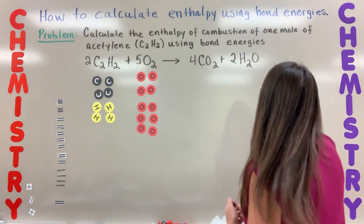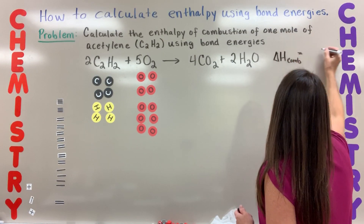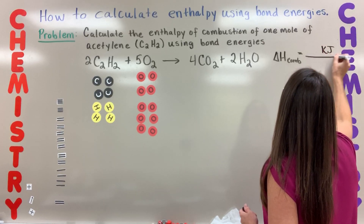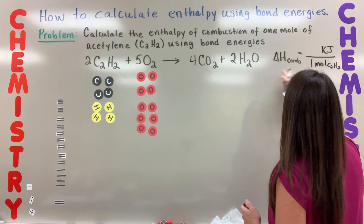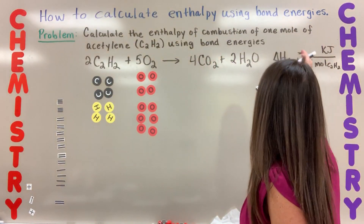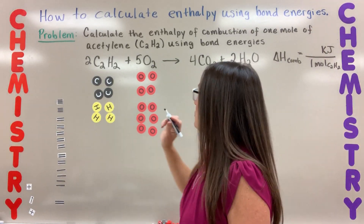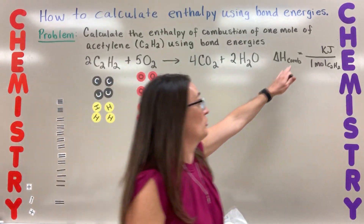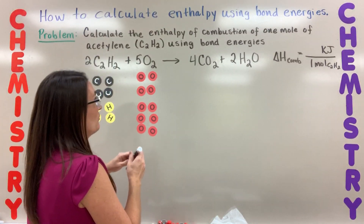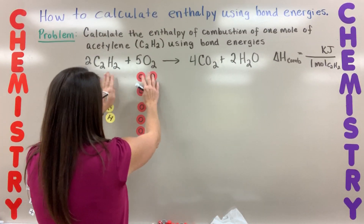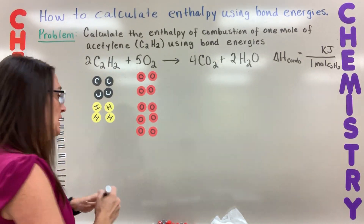The next step is figuring out the heat or enthalpy of combustion in kilojoules per one mole of acetylene — that's our final goal. Hopefully you can make a prediction about the sign: because it's a combustion reaction, typical combustions are exothermic, so you'd predict the sign would be negative. But we'll prove it. Next we have to figure out how these molecules are bonded.